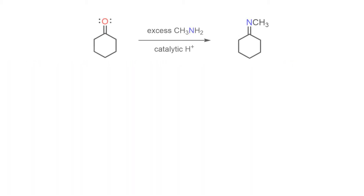When an aldehyde or ketone is treated with a primary amine in the presence of an acid catalyst, an imine is formed, along with a molecule of water as a by-product.